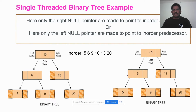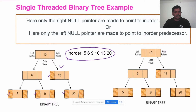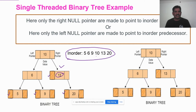In the single threaded binary tree, whenever the left pointer is null, which are the reference nodes of these null pointers? The left pointer will be connected to the inorder predecessor. For example, take node 13. What is the inorder predecessor of 13? It is 10. So the reference node of 13 is 10 — node 13 will be connected to node 10.